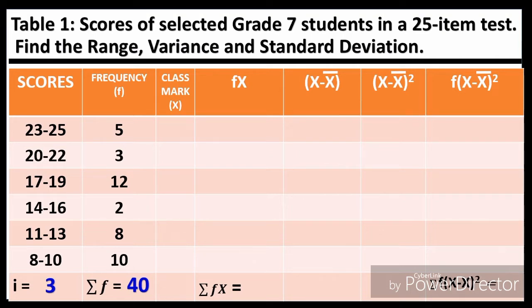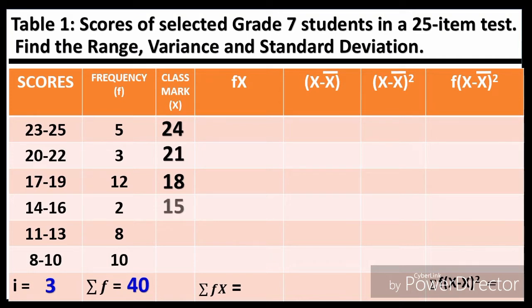Adding the frequencies gives us 40. Next, to find the class mark, we take 23 plus 25 divided by 2: that's 48 divided by 2, which equals 24 — or simply the middle value between 23 and 25. The class marks are: 24, 21, 18, 15, 12, and 9.